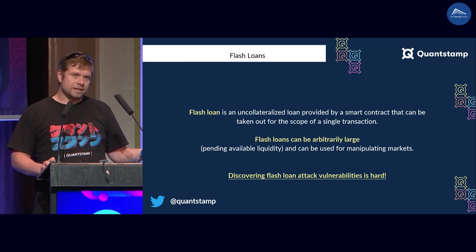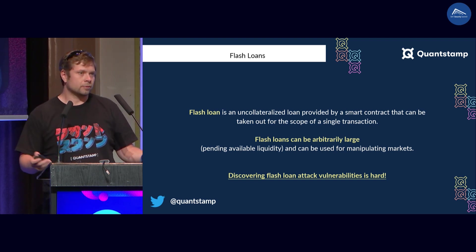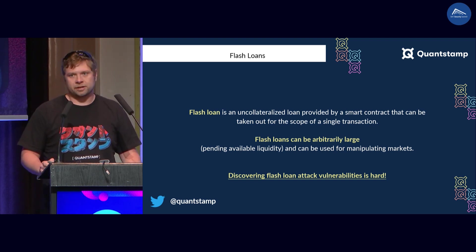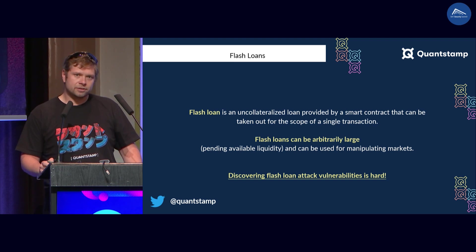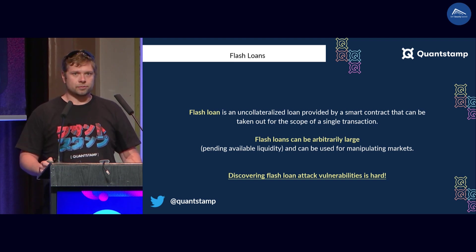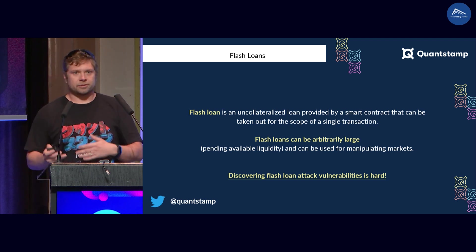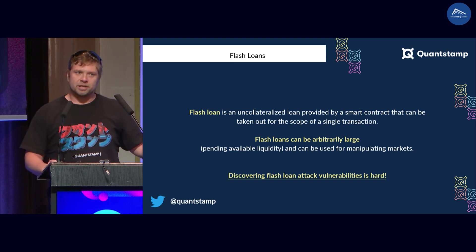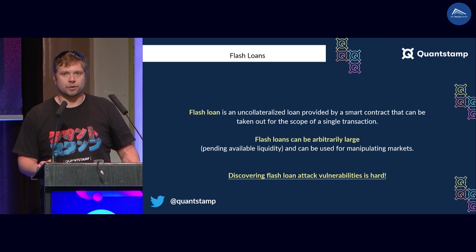If you repaid, the transaction remains unreverted; otherwise it reverts. Flash loans were designed for closing arbitrage opportunities, and sometimes they're used for that. But because you can borrow a very large amount of money, they are also being used to exploit DeFi protocols. Attackers usually take a flash loan, manipulate some market, and then exploit another protocol that uses that market as a price oracle.